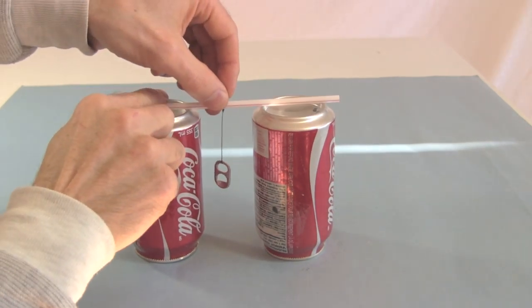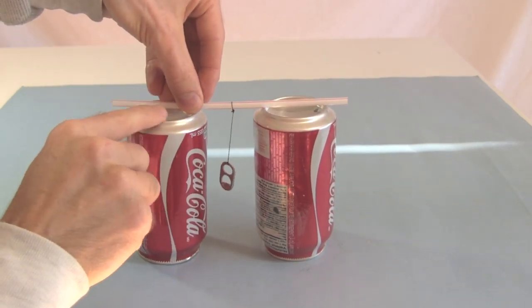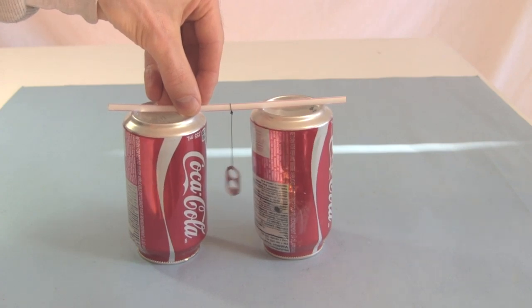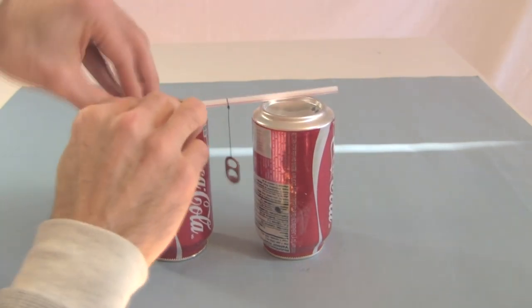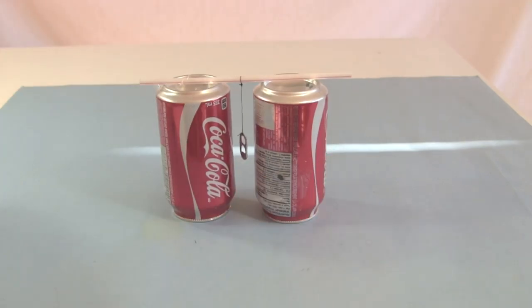Next, put the thread in the middle of the drinking straw and tape one end of the drinking straw to one of the soda cans. And there we go.